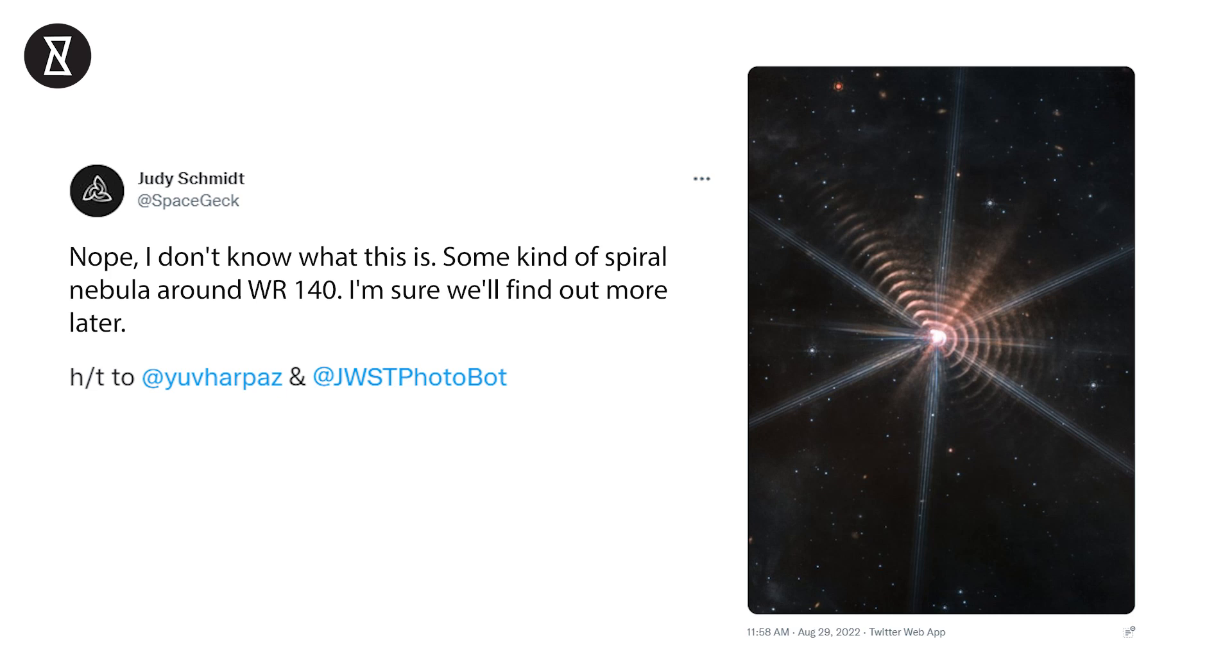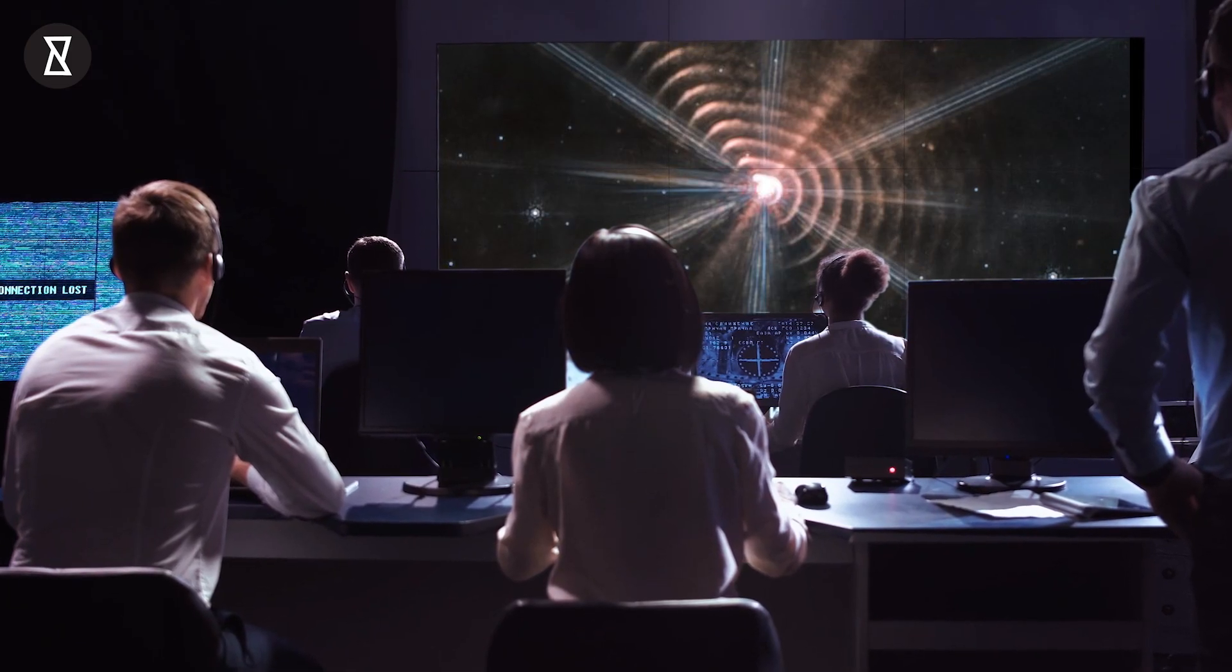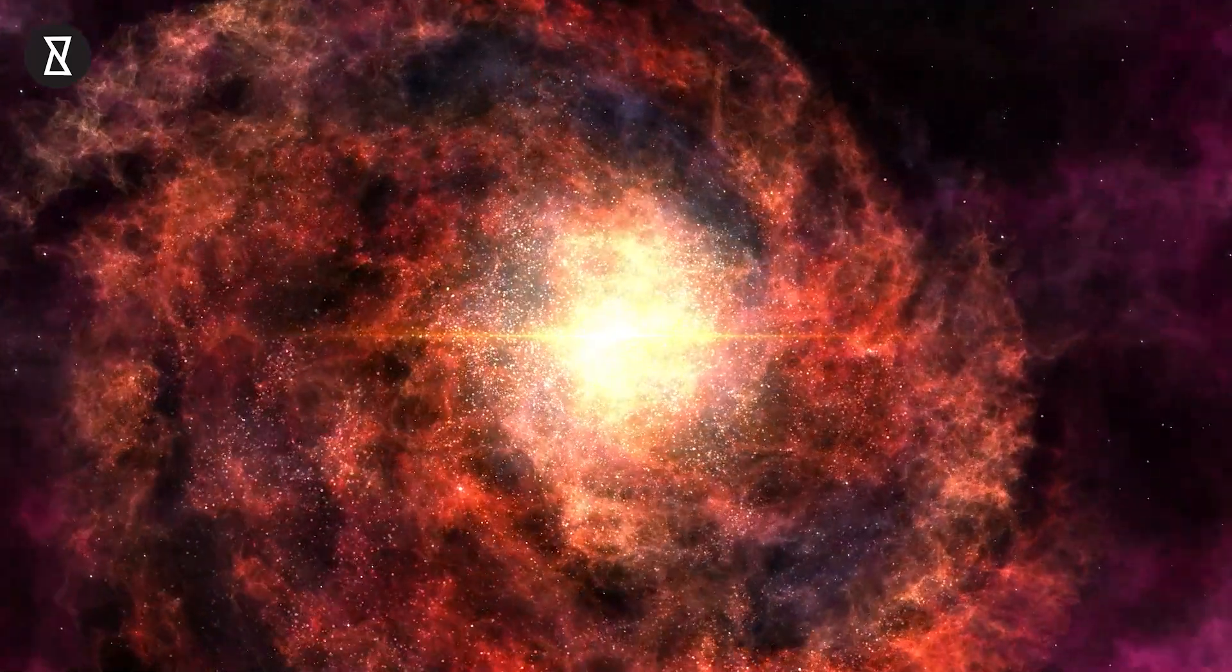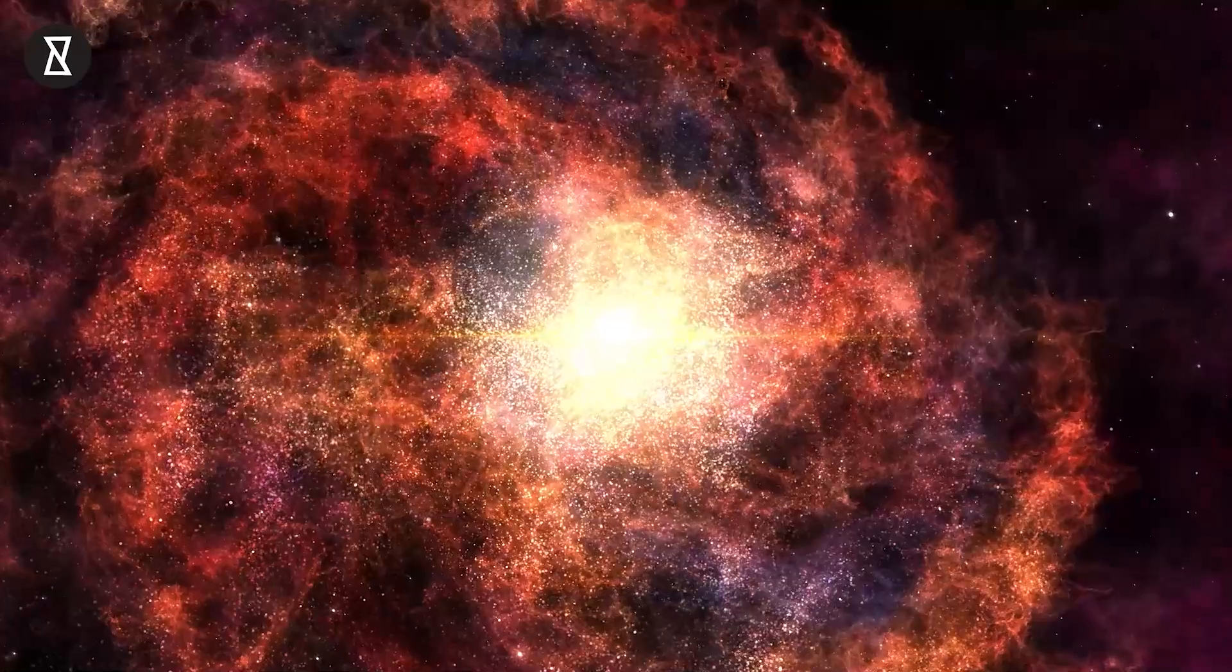No, I don't know what this is. Some kind of spiral nebula around WR140. I'm sure we'll find out more later, she tweeted. We will wait for scientists to find out what these mysterious rings around the star are. It is most probably a spiral nebula. What do you think? Let us know in the comments below.